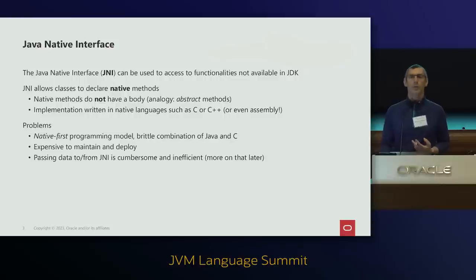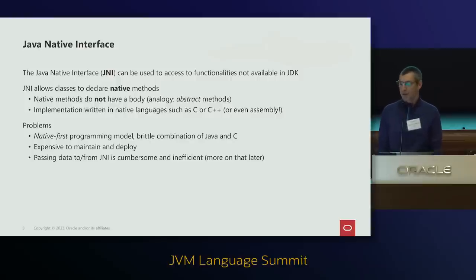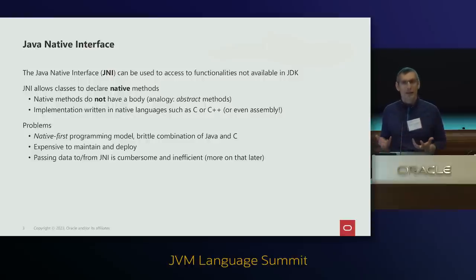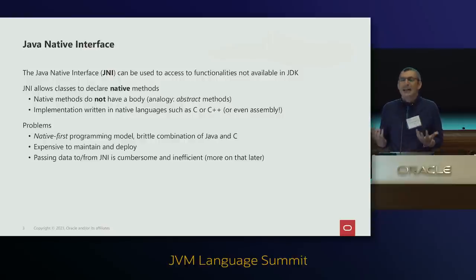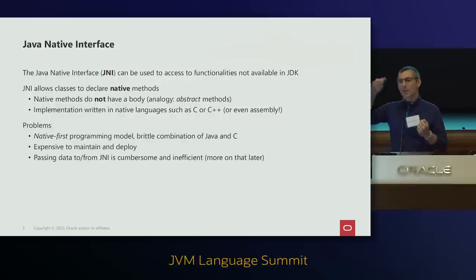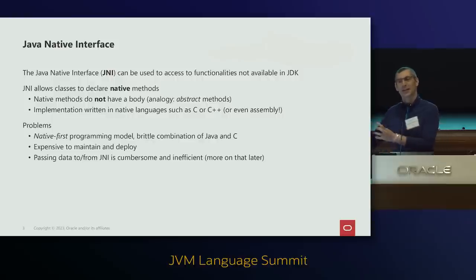How do developers access native libraries today? That's with JNI — Java Native Interface. JNI allows you to declare native methods, like abstract methods, that you can implement in C, C++, or even assembly. The biggest issue with JNI is that its programming model is what I call native-first. It allows you to jump over the fence from Java to native, but then it incentivizes you to stay on the native side.